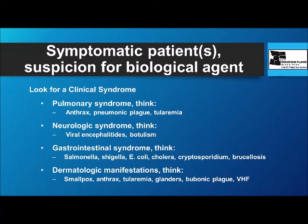For symptomatic patients who present having been exposed to something, look at the clinical syndrome. If the clinical syndrome is primarily pulmonary, think about anthrax, plague, and tularemia. If it's primarily neurologic — altered mental state, weakness, paralysis — think about encephalitis and botulism. If it's a GI syndrome, think about GI pathogens: Salmonella, Shigella, E. coli, etc. And if you see dermatologic manifestations, think smallpox, anthrax, tularemia, glanders, plague, and viral hemorrhagic fever. That gets you started until you can confirm the diagnosis.